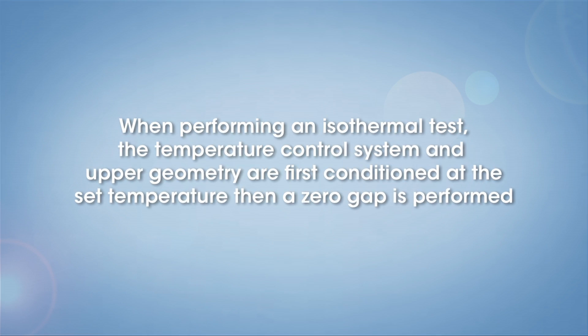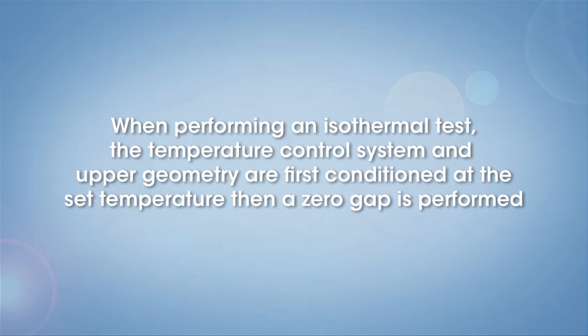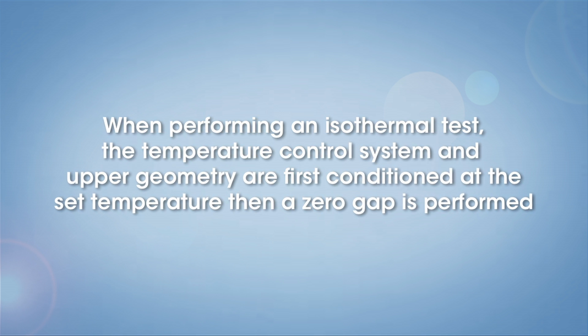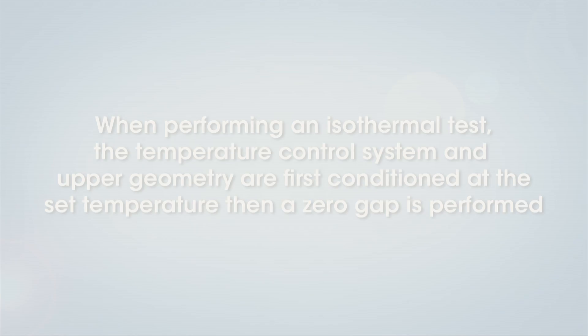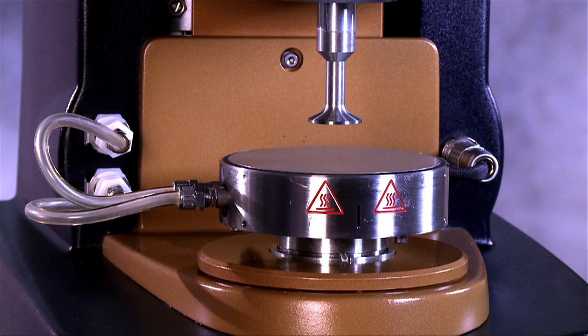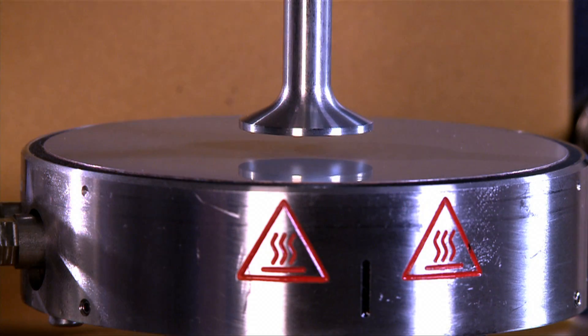When performing an isothermal test, the temperature control system and upper geometry are first conditioned at the set temperature, then a zero gap is performed. The measurement gap for each experiment following is set based on that reference point.